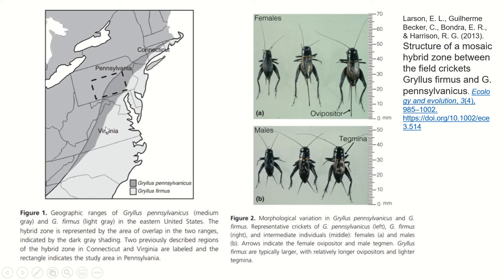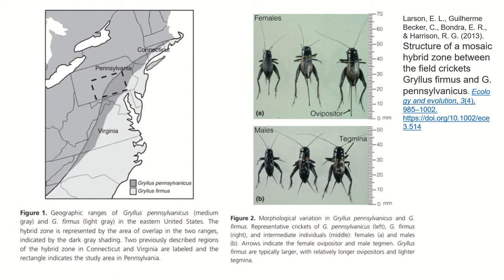Even within the overlapping range, these two species of crickets live on different kinds of soil, so interbreeding is really rare. You can see the female and male of Gryllus pennsylvanicus, the female and male of Gryllus firmus, and the hybrid, which has a body size phenotype in between the two species. Whether we consider them separate species is complicated — the hybrids are fertile but look quite different in size — and they don't hybridize often because they use different soil types within the same zone.